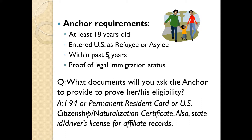Anchor requirements: the anchor must be at least 18 years old and must have entered the U.S. as a refugee or asylee — not an SIV. There is a separate program for families of Iraqi SIV recipients available on the USCIS website — search for 'Iraqi SIV family reunification.' Anchors must have entered within the past five years and must provide proof of legal immigration status. The documents needed are the I-94 card if they are not yet a permanent resident, or their LPR card, or citizenship documentation. You need to scan that as part of the AOR application.